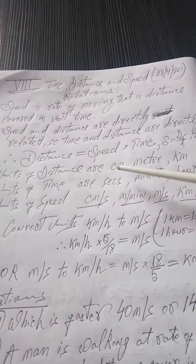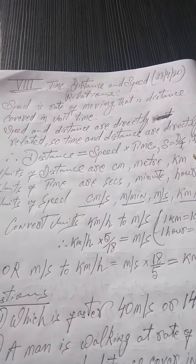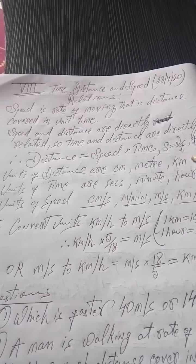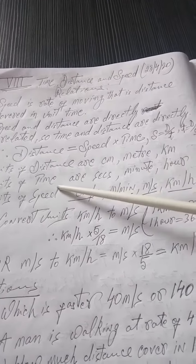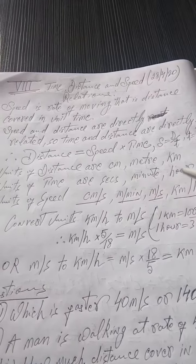Units of distance are centimeter, meter, kilometer, usually used in arithmetic. Units of time are seconds, minutes, hour.